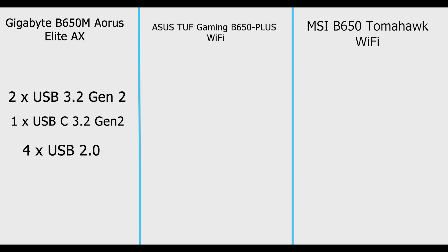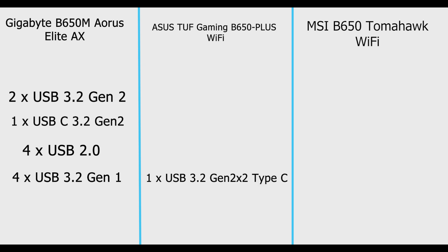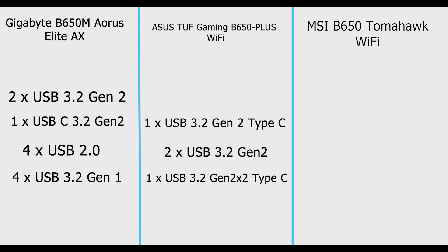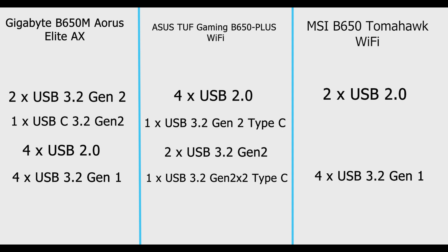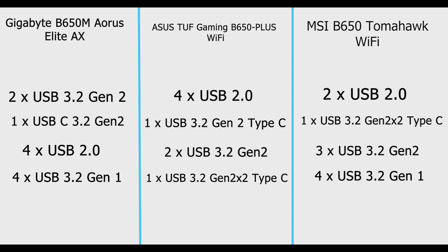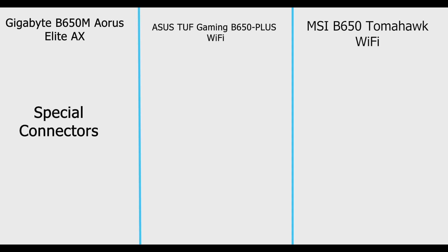For rear USB ports, Gigabyte has two USB 3.2 Gen 2, one USB Type-C 3.2 Gen 2, four USB 2.0, and four USB 3.2 Gen 1. ASUS has one USB 3.2 Gen 2x2 Type-C, two USB 3.2 Gen 2, and one USB 3.2 Gen 2 Type-C. MSI has two USB 2.0, four USB 3.2 Gen 1, three USB 3.2 Gen 2, and one USB 3.2 Gen 2x2 Type-C port.